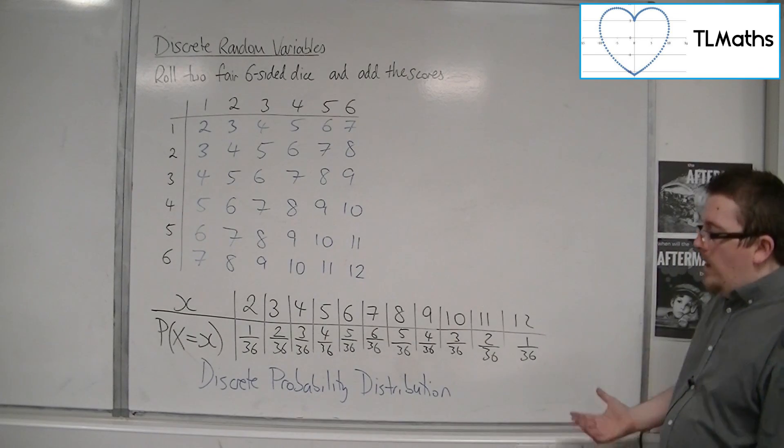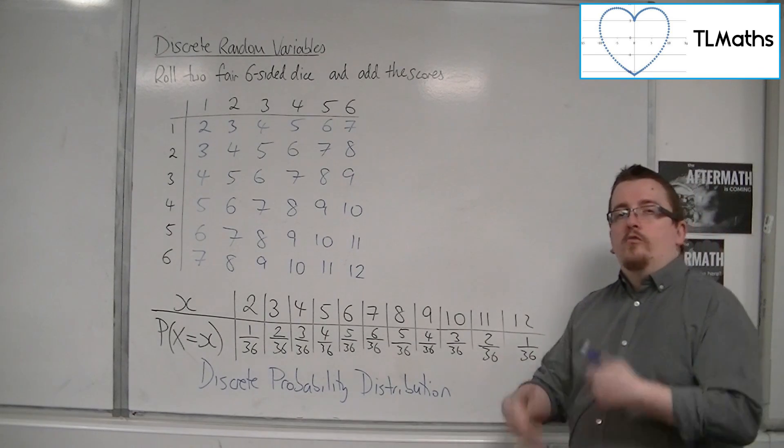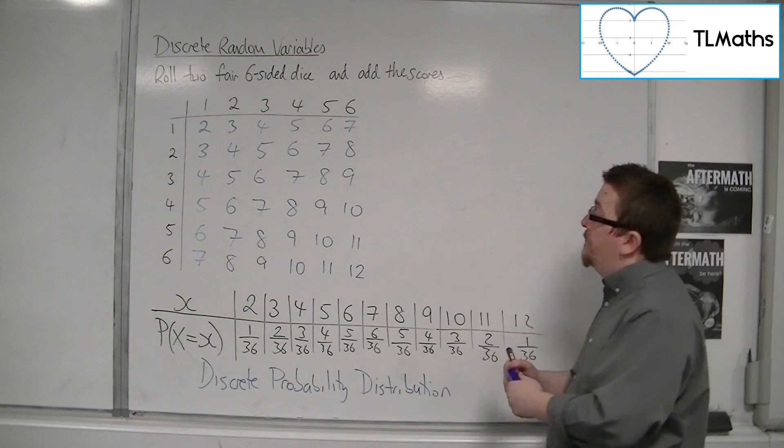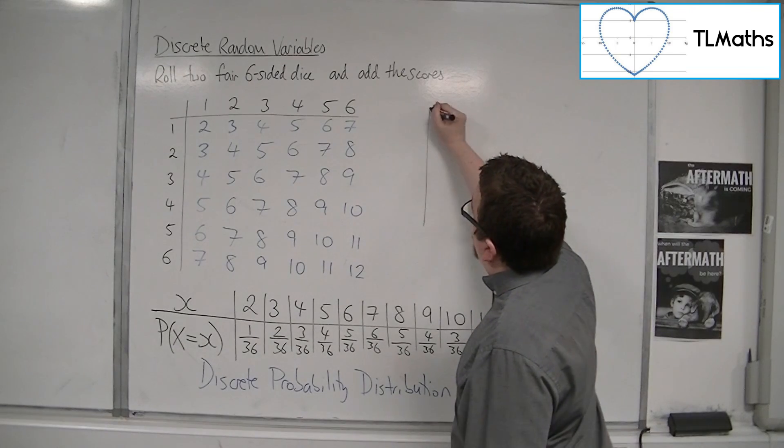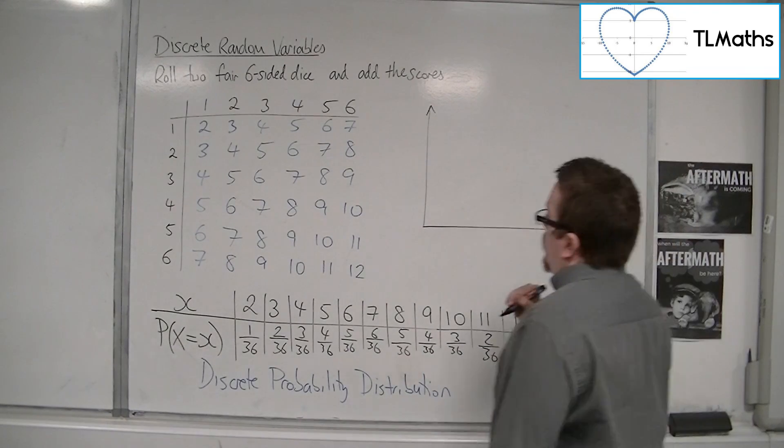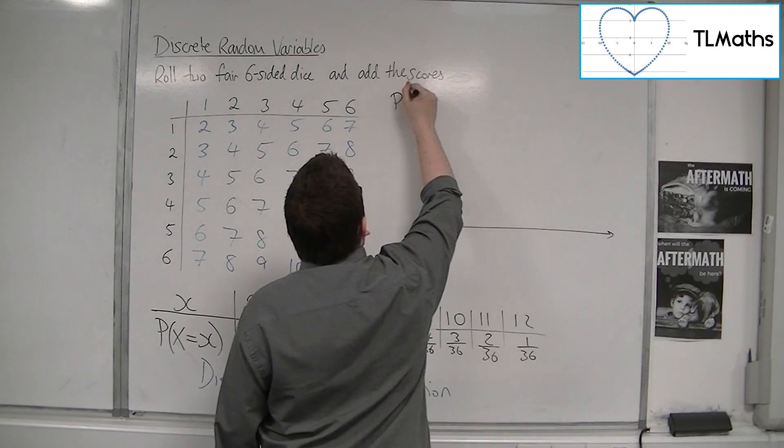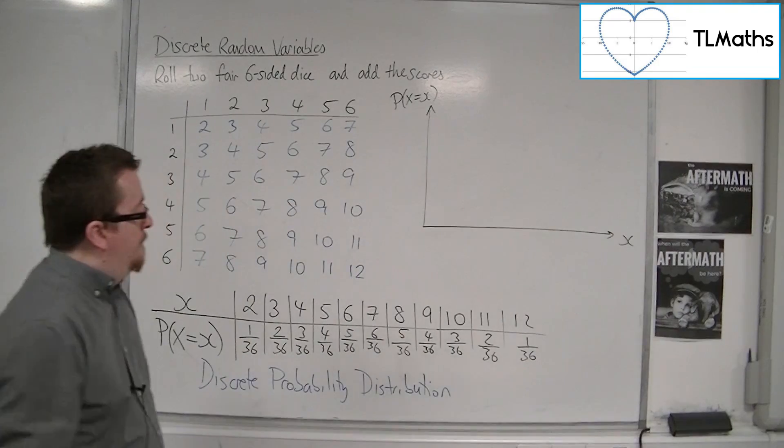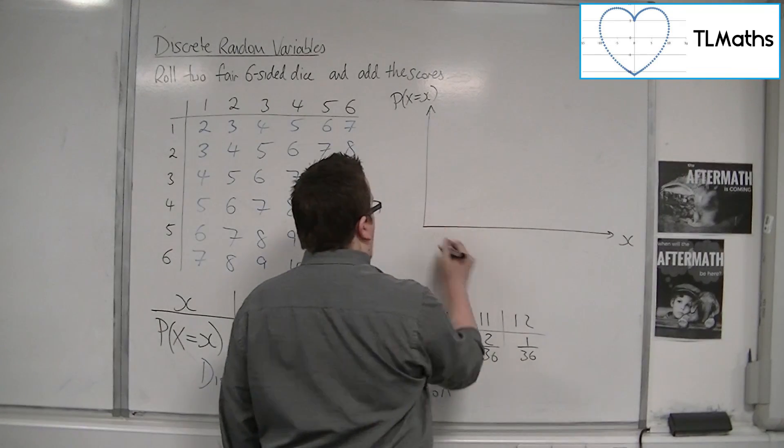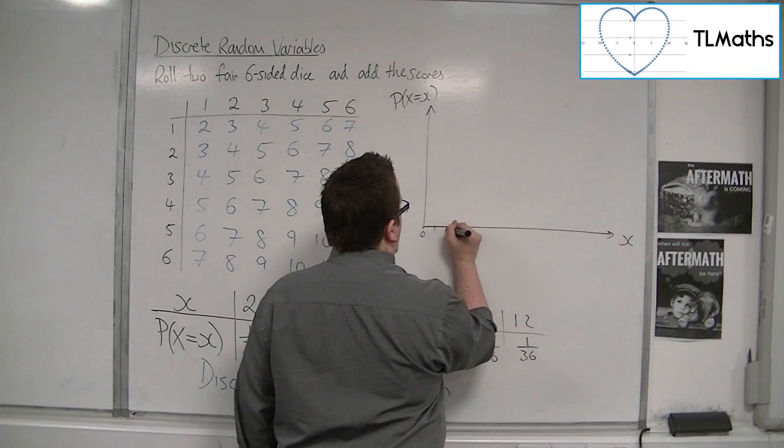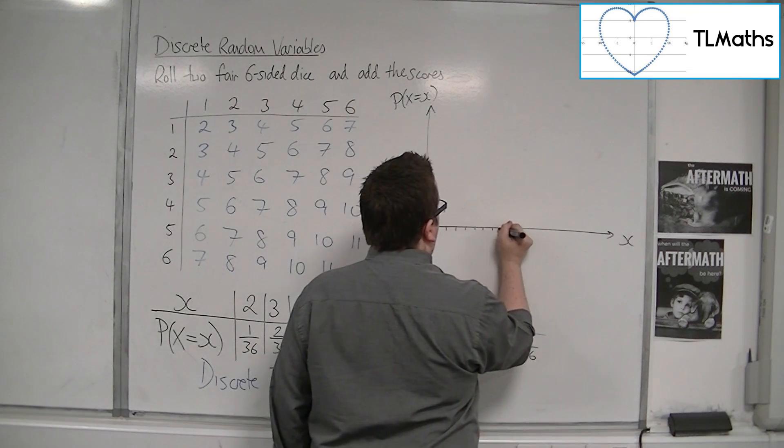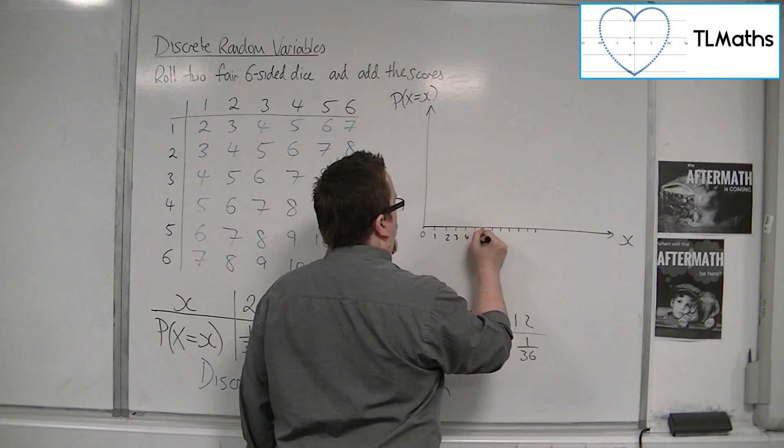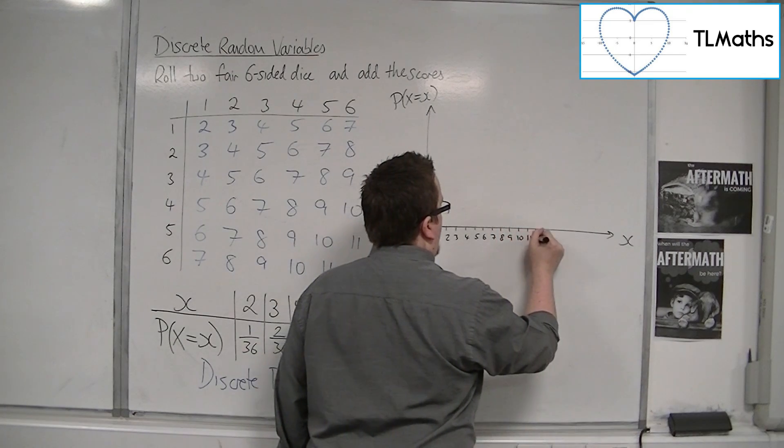So with that in mind, you could then represent this graphically using what's referred to as a stick graph. A stick graph looks something like this. You have the probabilities up the sides, and then you've got your x's along the bottom: 1, 2, 3, 4, 5, 6, 7, 8, 9, 10, 11, 12. And we're going to have, well, our probabilities are going from 1 to 6 out of 36.